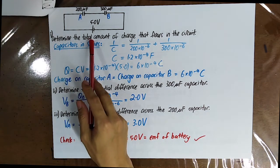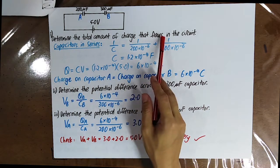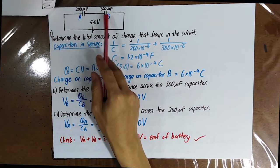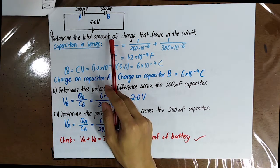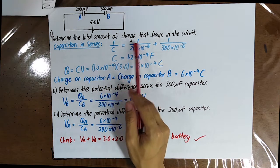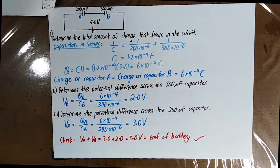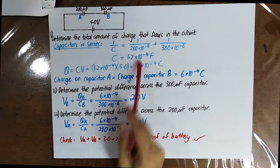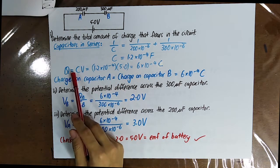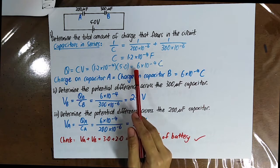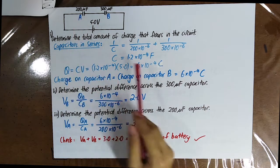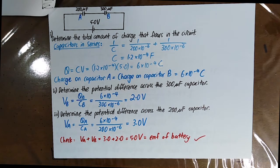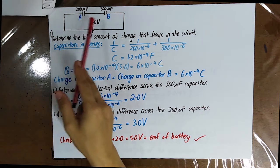Please determine the total amount of charge that flows inside the circuit. In the circuit, you have two capacitors connected in series. You use the formula 1 over C equals 1 over CA plus 1 over CB to find the equivalent capacitance. Then by using Q equal to CV, you can find the charge on capacitor A, which is also the charge on capacitor B. So QA is equal to QB.